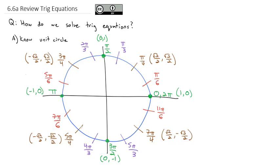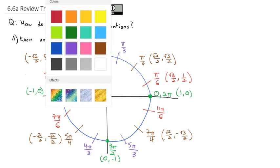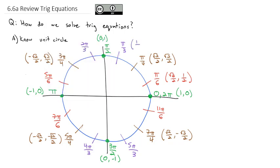For the π/6 and π/3 angles, we have to decide if we have a long distance or a short distance. The longer distance will always be √3/2 and the shorter distance is 1/2. With π/6, we have a long x and a short y, so it's (√3/2, 1/2). With π/3, the x distance is short at 1/2 and the y distance is longer, √3/2.